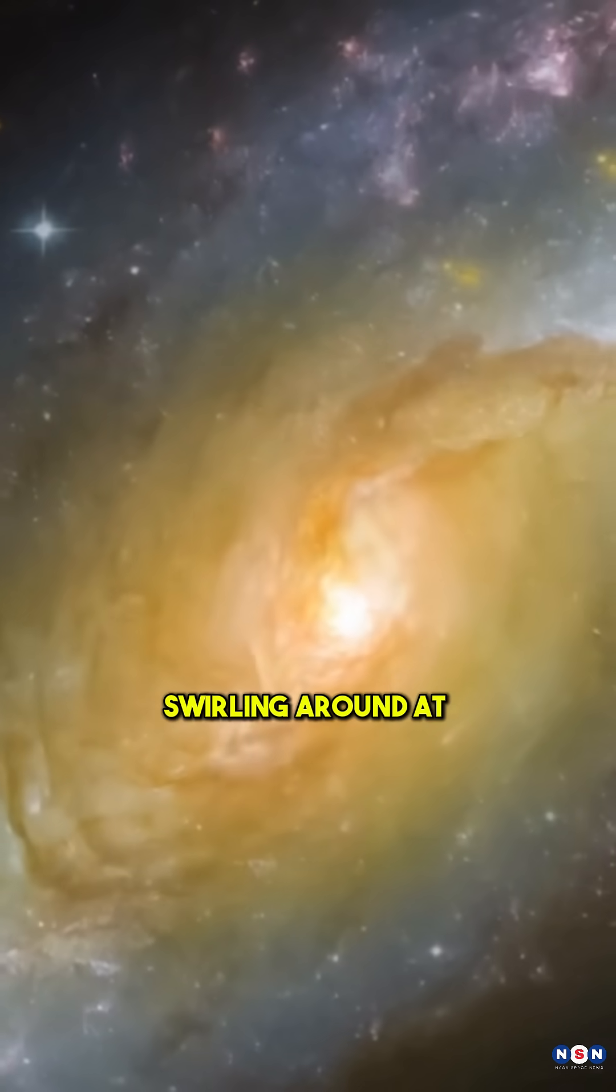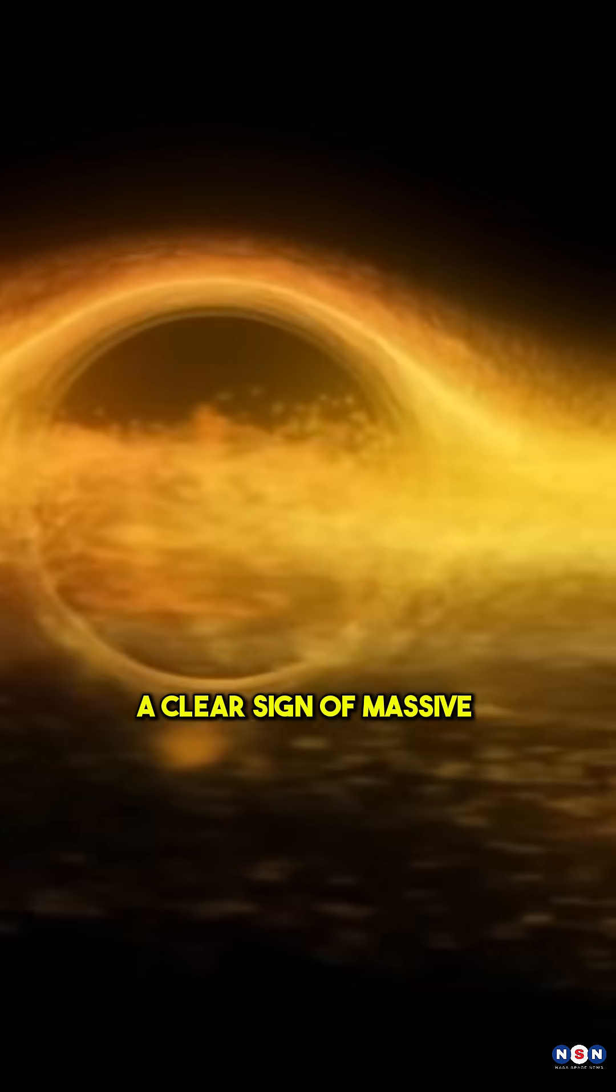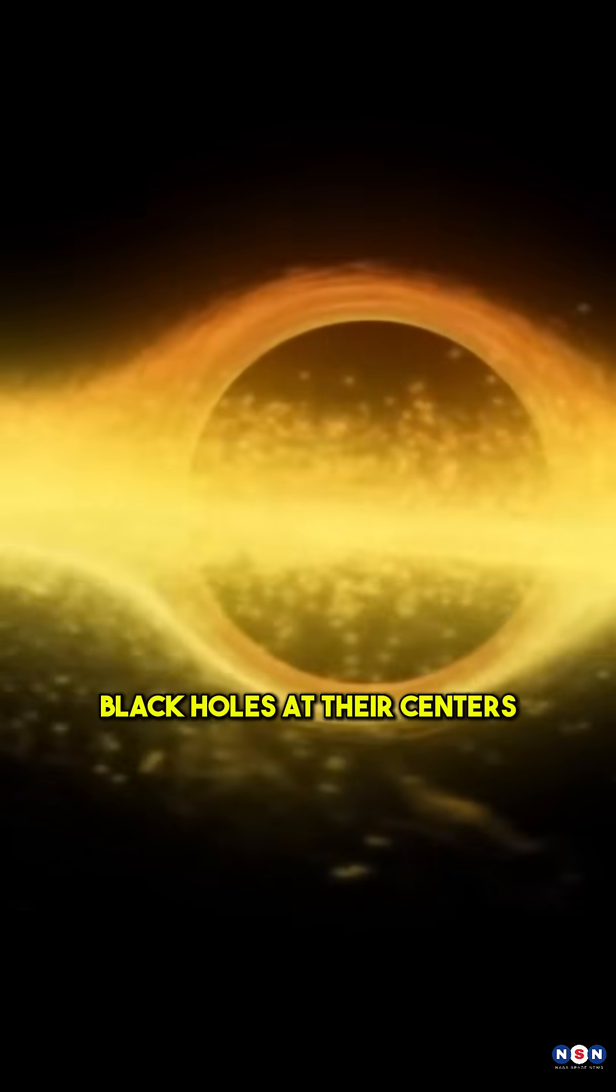Observations show gas swirling around at 1,000 kilometers per second, a clear sign of massive black holes at their centers.